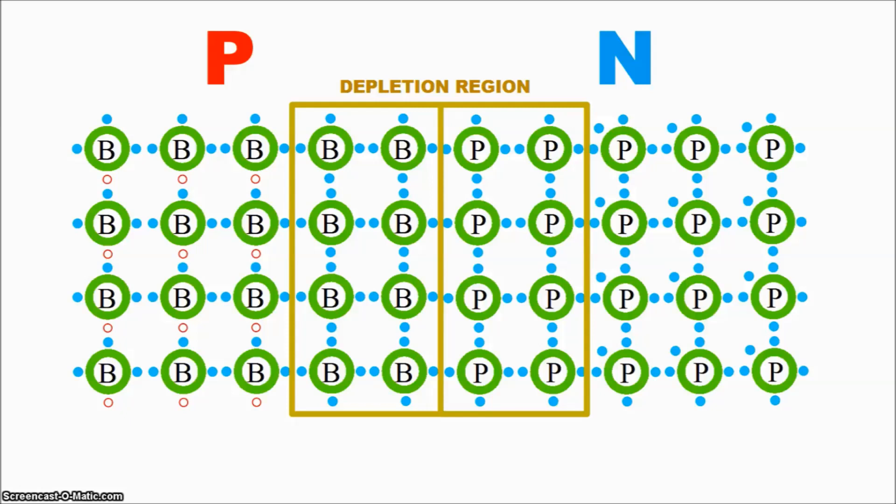There is a layer of p-type silicon that now has extra electrons filling its holes. Remember, this area used to be neutrally charged. Now the electrons make this area have a negative charge. On the other side, a layer of n-type silicon just had its electrons leave. Remember, this also used to be neutrally charged. Now the lack of electrons makes this area have a positive charge. The layer of atoms at the border is now ionized and is depleted of charge carriers. This prevents any current from flowing.